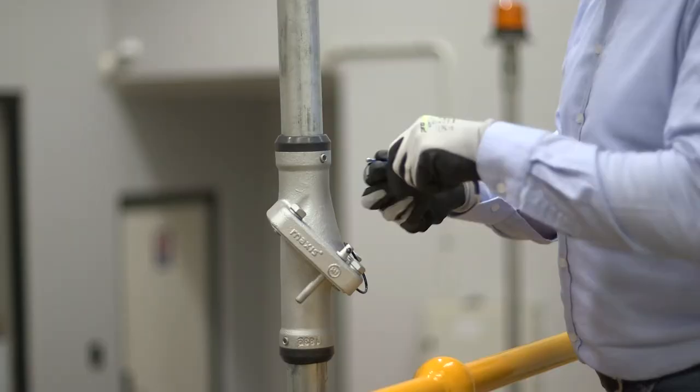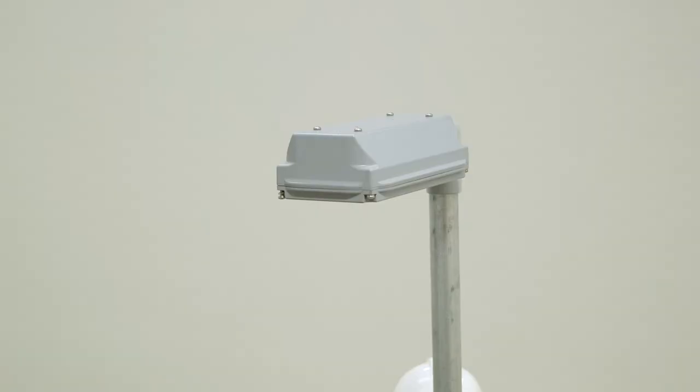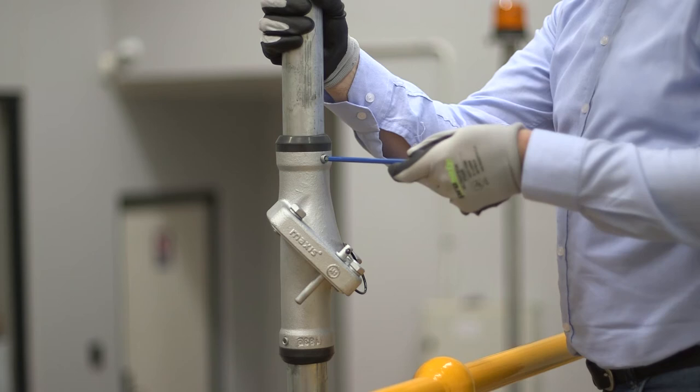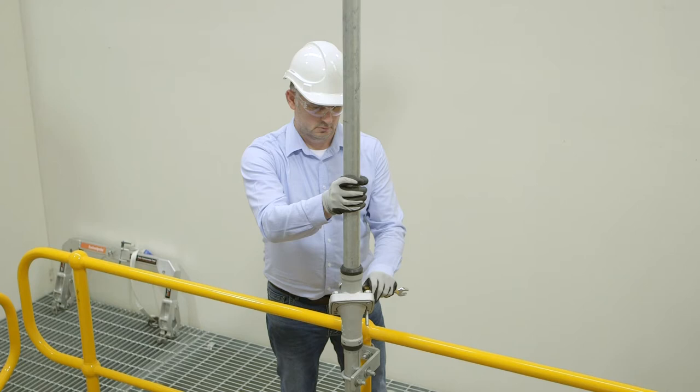With pole in upright position, check that light fixture is facing in desired direction. If adjustment is required, loosen top grub screws and rotate pole top. Tighten grub screws fully.